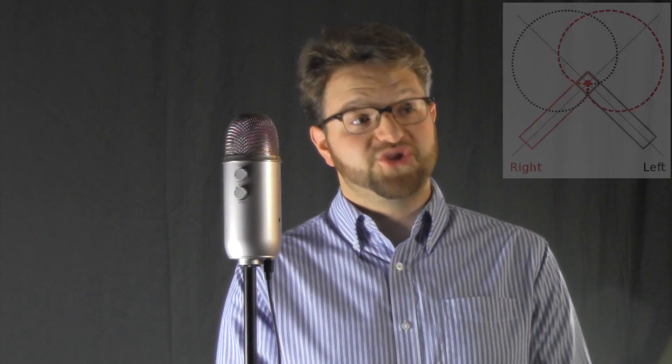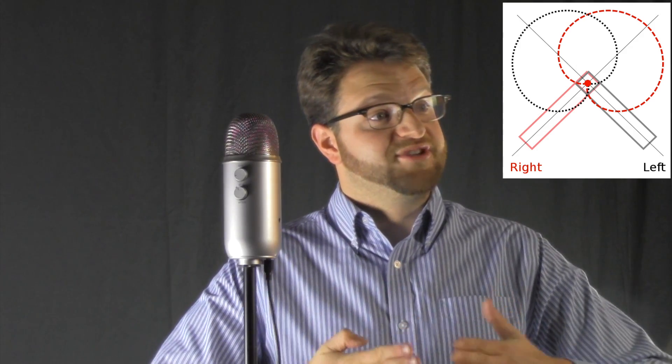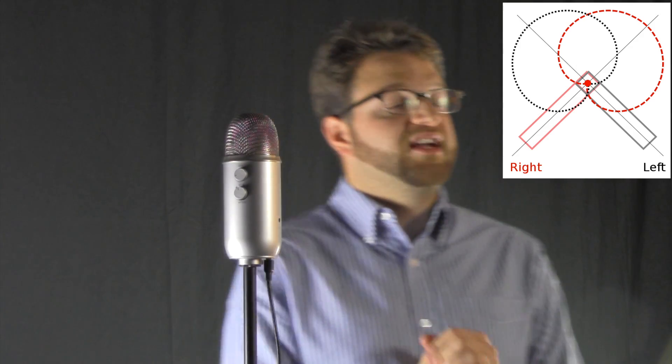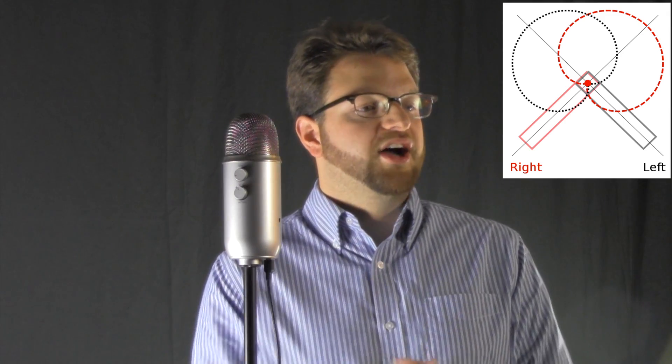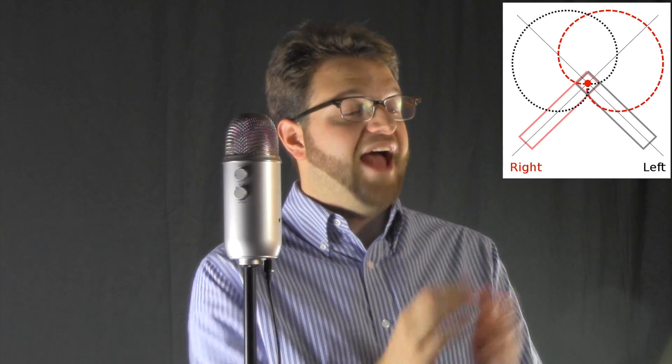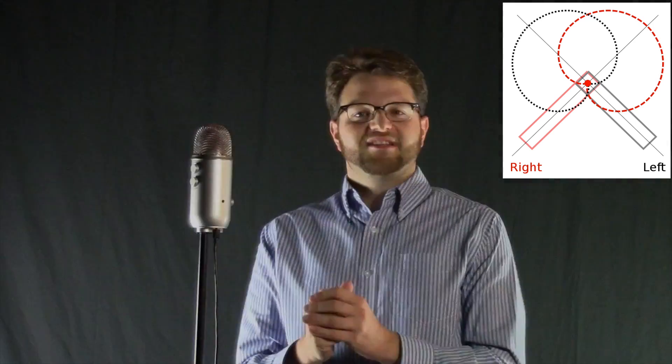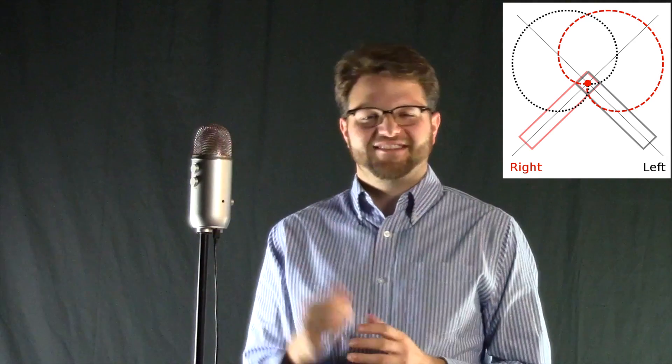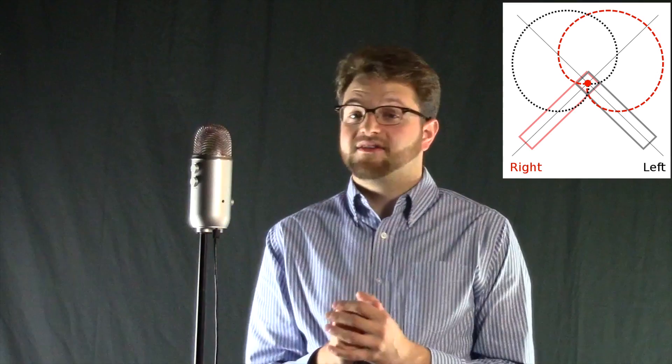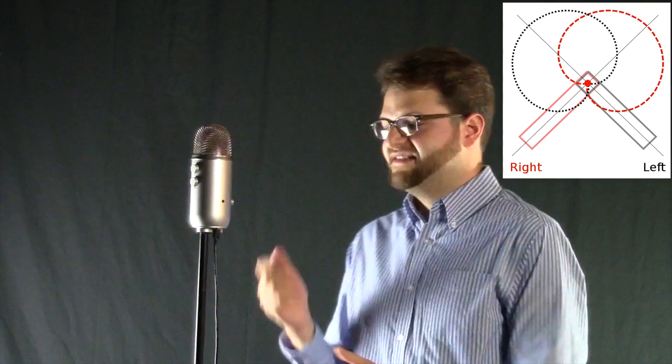Now the really cool thing about the Blue Yeti is that it has a stereo microphone in it which means it actually has two microphones facing two different directions. So if you were recording let's say a choir or a group of singers you could put the microphone dead center and you'd actually get a nice stereo spread of the singers which means the singers on the left would be on the left, the singers on the right would be on the right and the singers in the middle will be in the middle. So let's demonstrate that.